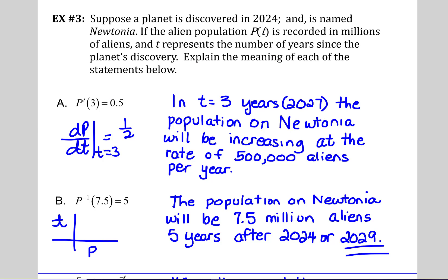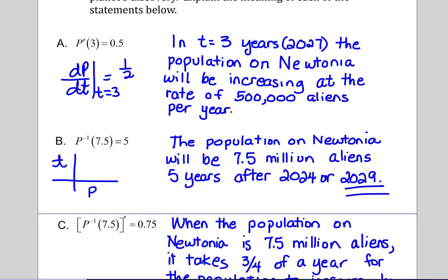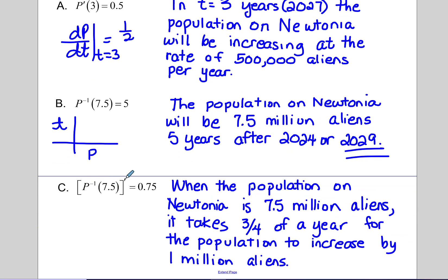In letter C we have P inverse of seven and a half prime. So this is looking at the rate of change at seven and a half, and that's telling us when we come out here to seven and a half million people, whatever that curve is right there, that the derivative, so that rate of change at seven and a half is three quarters or 0.75. And verbally that would mean when the population of Newtonia is seven and a half million aliens, it would take three quarters of a year for the population to increase by a million more aliens.